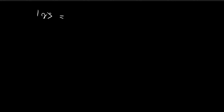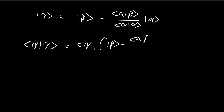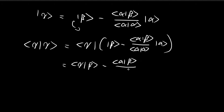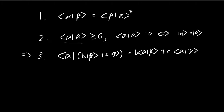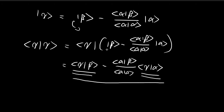We're going to do this by first defining a vector called gamma, defined as beta minus the inner product of alpha with beta divided by the inner product of alpha with itself, times the vector alpha. Then we're going to start off by taking the inner product of gamma with itself, which is equal to taking the inner product of gamma with this expression. Substituting in, and then using the third rule, I can simplify this as the inner product of gamma with beta minus those terms times the inner product of gamma with alpha. So we need to evaluate these two inner product terms separately.